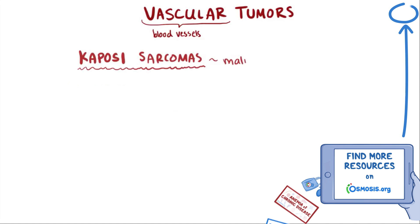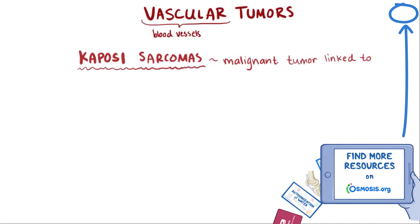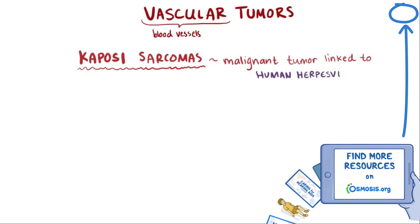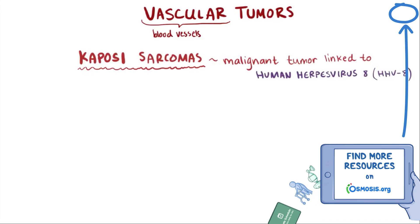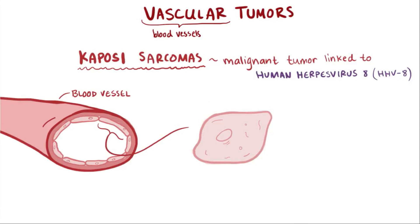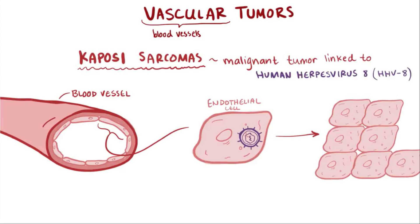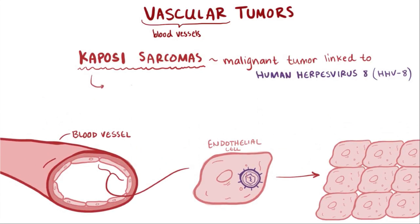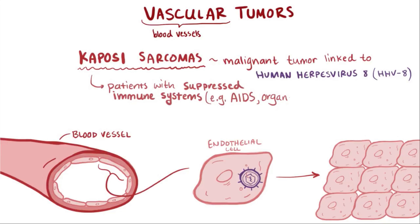Kaposi sarcoma is a malignant vascular tumor that's linked with an infection of the human herpesvirus 8, otherwise known as HHV-8, and it's a cancer of the blood vessel endothelial cells. This virus is thought to get inside the cells and cause them to replicate uncontrollably. This type of cancer is seen in people who have suppressed immune systems, which is why it's one of the common diseases associated with AIDS and is also a complication of organ transplant patients.